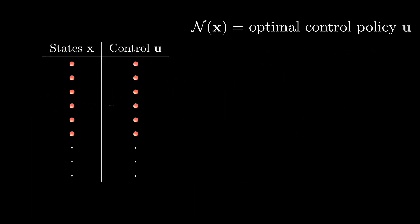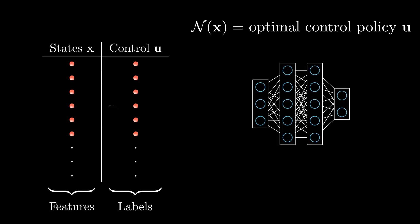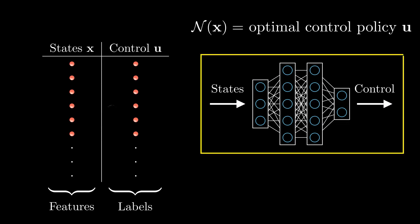It turns out that the mapping between the states and optimal control can be learned. Using supervised learning with the states as features and the controls as labels, a simple feed-forward neural network can be trained to learn the optimal control policy. The resulting network is what we call a Guidance and Control Network.